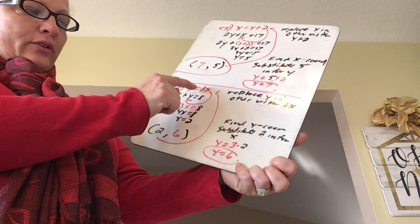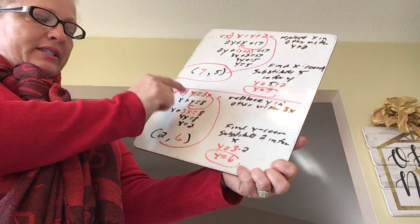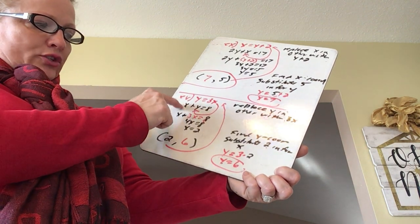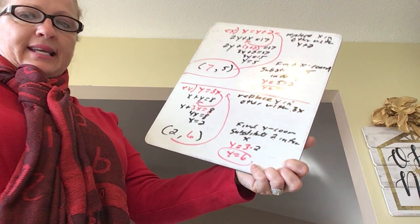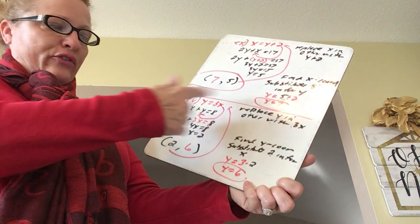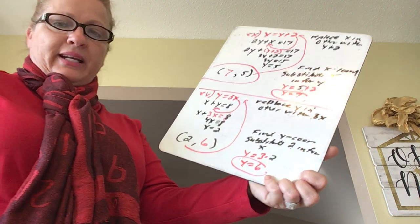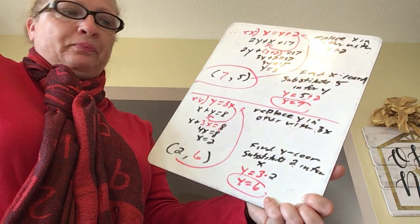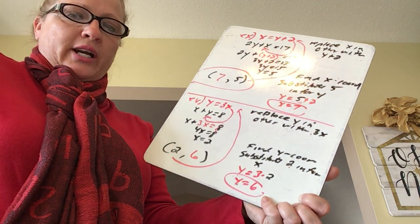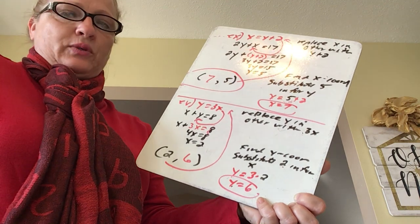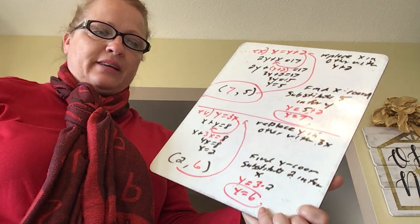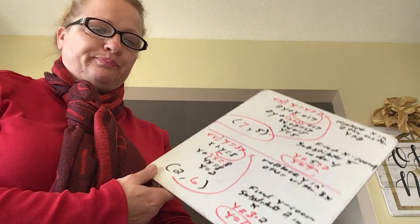Easy to check: 3 times 2 is 6, and 2 plus 6 is 8. Now, if you're thinking that would have been easy to graph, I agree — I'm just starting with easier problems on our first day of substitution.